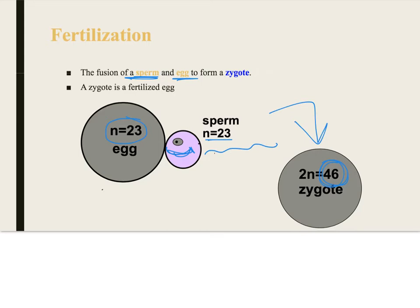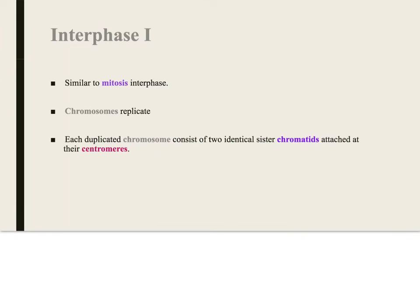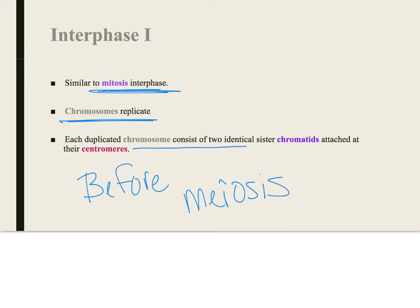So let's talk about the stages really briefly. Interphase 1 - it's very similar to mitosis, you've got your chromosomes replicating. This happens only once. Interphase happens once and it happens before meiosis. So you've got your chromosome and you've got your chromatids and you're attached at the centromere.